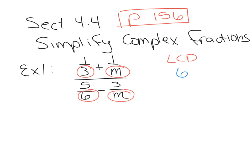We need to add on the M's to cover each of those, so the common denominator is 6M. We're not going to change all the individual denominators — instead we're going to multiply both the numerator and the denominator by 6M, and I'm going to use 6M over 1 because these are fractions. This is just a distribution.